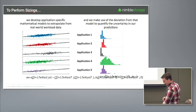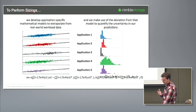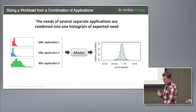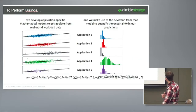That natural variance is important because, obviously, once we've constructed a particular application profile, we want to understand the bounds of uncertainty around it.